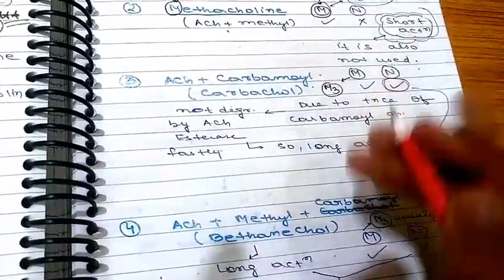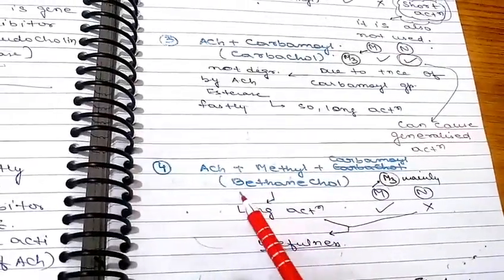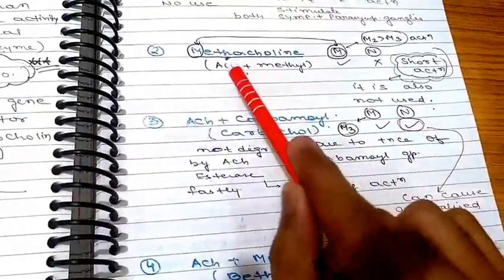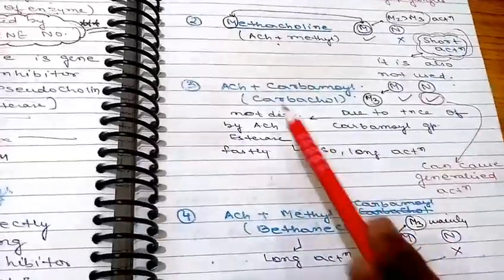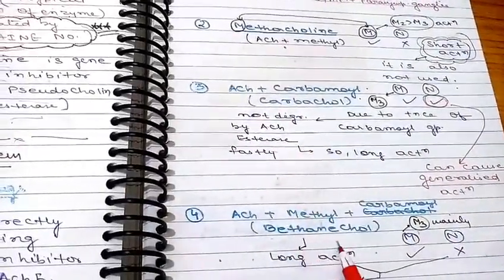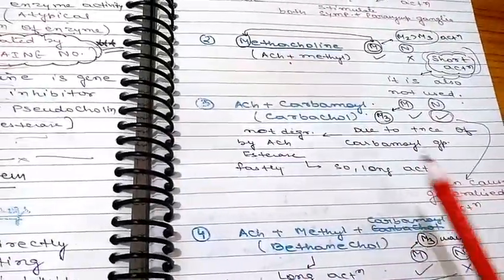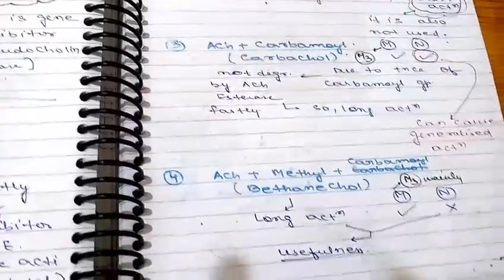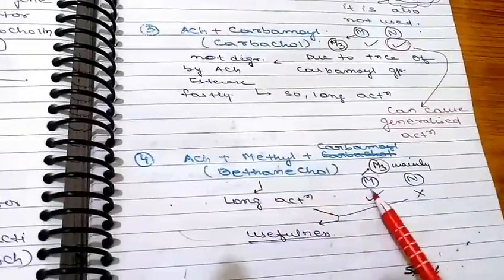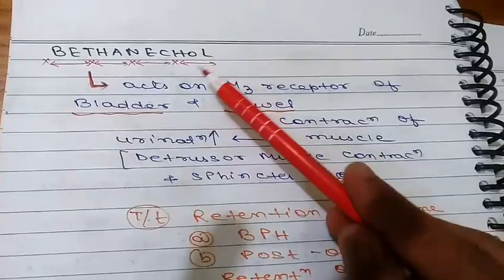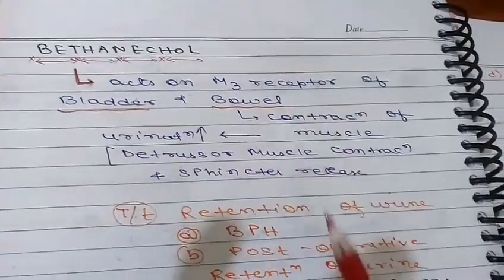Next is bethanechol, which combines the characteristics of both carbachol and methacholine — it is acetylcholine combined with a methyl group and a carbamoyl group. So bethanechol has properties of all: the methyl group gives it the characteristic of methacholine, and the carbamoyl group gives it the characteristic of carbachol. Bethanechol acts mainly on M receptors, not on N receptors, and has a long action. Because of these two properties, it is a clinically used drug.